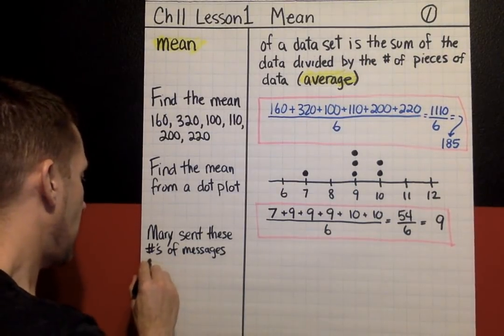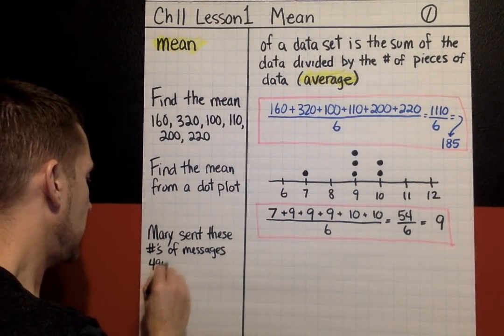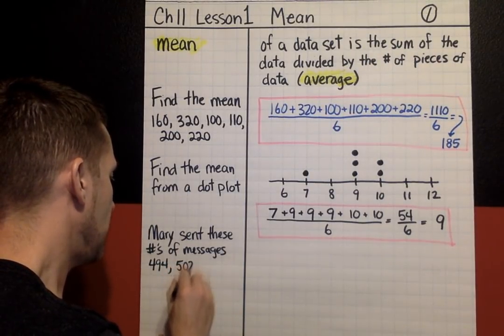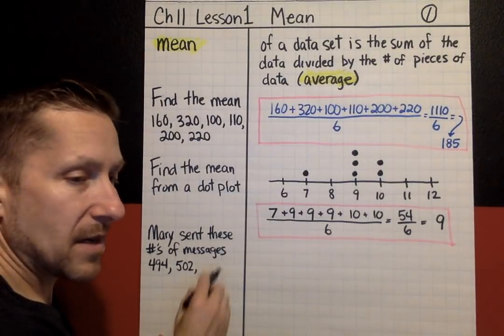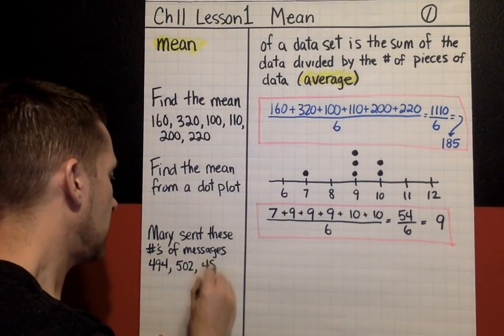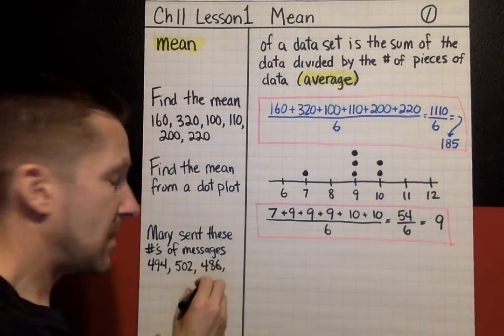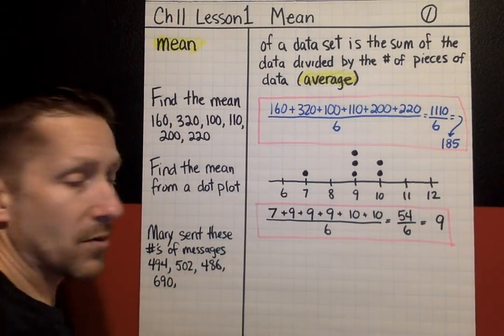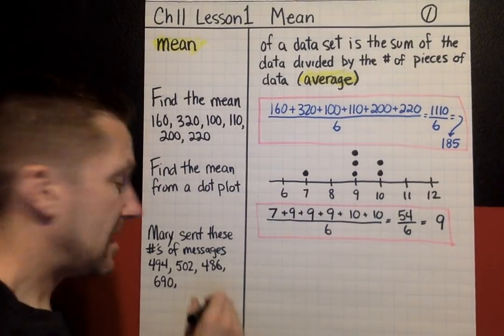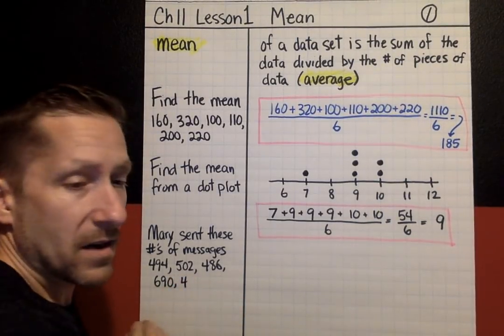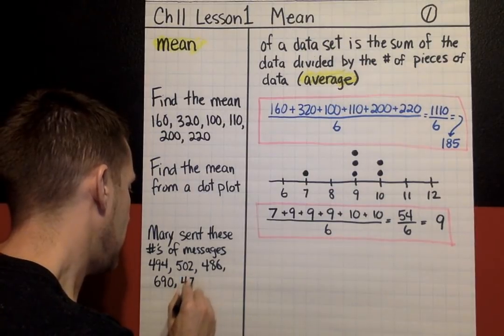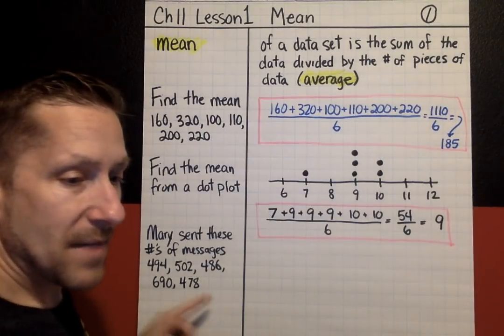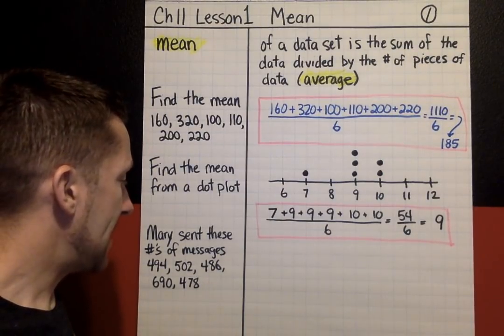First month she sent 494 messages. Then the next month she sent 502. The next month, 486. And the next month, 690, sent more messages that month. And month 5, 478. And I don't know how many messages she sent in the last month, month 6.